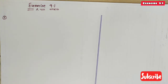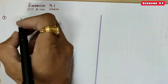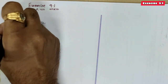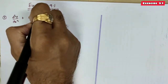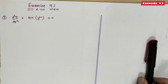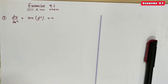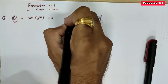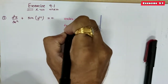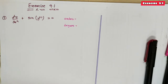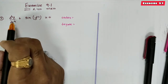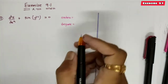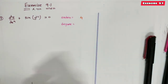The first given differential equation is d⁴y/dx⁴ + sin(y''') = 0. For this differential equation we have to define order and degree. The order of a differential equation is the highest order derivative present in the equation. Here the highest order derivative is 4, so the order of this differential equation is 4.